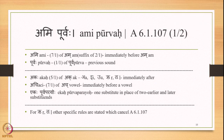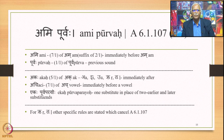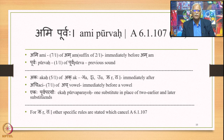Let us study Amipurvaha 6.1.107. There are two words in the Sutra: Ami and Purvaha. Ami is the 7th case singular of Am. Am is the 2nd case singular suffix — the Dvitiya Ekavachana Pratyaya — in the set Suavjas, Am, Out, Shas, and so on. Ami means immediately before Am. Purvaha is the 1st case singular, meaning the previous sound, and this is the substitute.